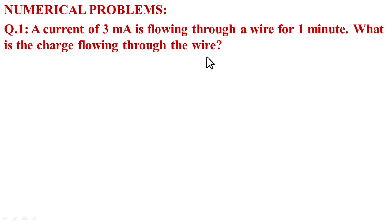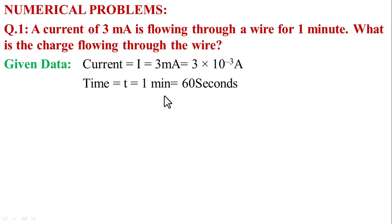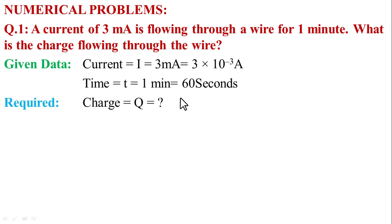According to the given statement, first of all we write the given data. Current I is equal to 3 mA. Here, 1 mA is equal to 10 raised to the power minus 3. So current I is equal to 3 multiplied by 10 raised to the power minus 3 ampere. And time T is equal to 1 minute, that is equal to 60 seconds. We require charge Q, which equals question mark. We use the formula: I is equal to Q upon T, so Q is equal to I times T.